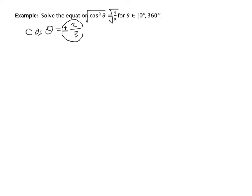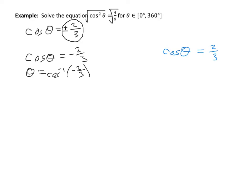This cosine θ is equal to two different values, so I'll solve two separate equations. First, cosine θ equals negative 2/3: taking the inverse cosine gives a primary solution of about 132 degrees. The secondary solution for cosine is the negative of that, which is negative 132 degrees. Since that's not on the interval, I add the period length of 360 degrees to get 228 degrees. Both 132 and 228 are on the interval.